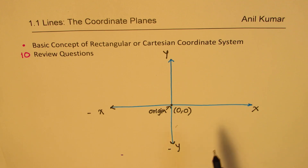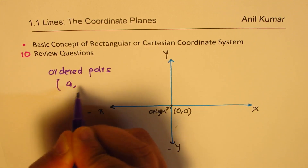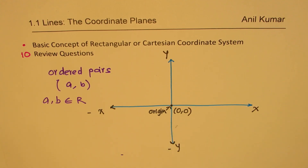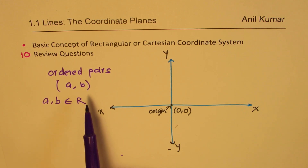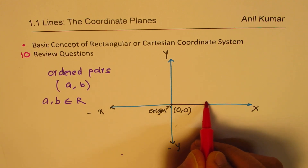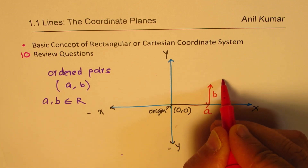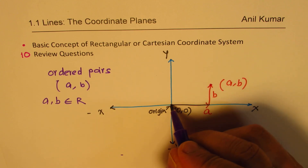Any point in our plane can be represented by ordered pairs, written as (a, b) where a and b belong to the set of real numbers. These ordered pairs are always written in parentheses. Remember, (a, b) is very specific: a is the distance from the origin along the x-axis, and b is the distance along the y-axis. This gives you the relative position from the origin.